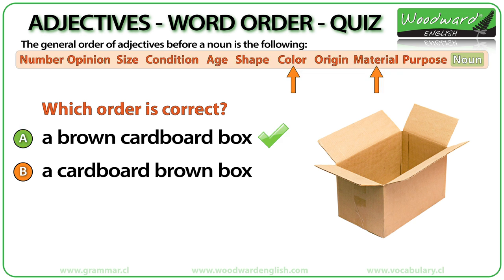A brown cardboard box. Because brown is a color and cardboard is a material — what the box is made of — color comes before material.